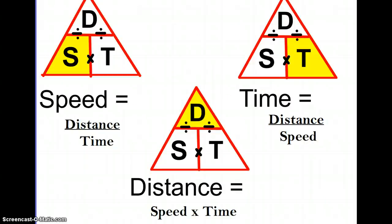Using the DST triangle is the easiest way to solve speed, distance, and time problems. Remember, you're going to cover up the letter that you're looking for. And what is left in the triangle is what you use for your math calculation. So, you can see speed is distance divided by time. Distance is speed times time. And time is distance divided by speed.